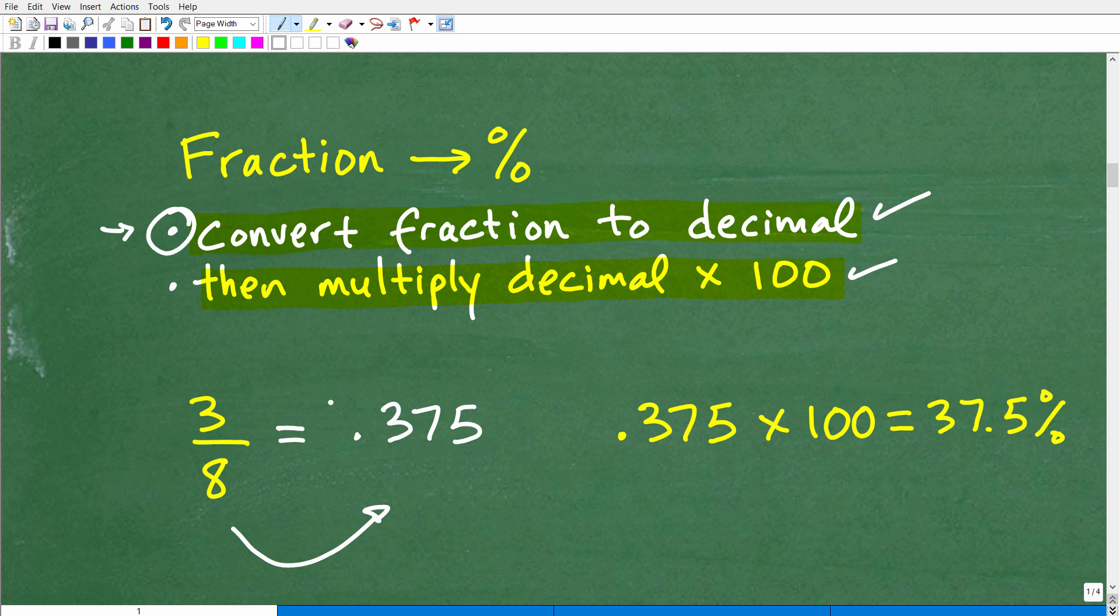Step number one: we're going to convert the fraction to a decimal. 3/8, 3 divided by 8, is the decimal equivalent of 0.375. Now we're going to take that decimal and multiply it by 100. So 0.375, you multiply that by 100, you get 37.5 percent. That is the final answer.